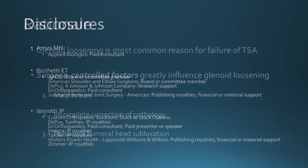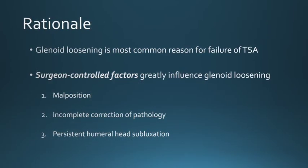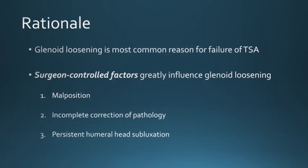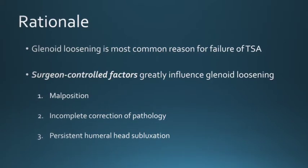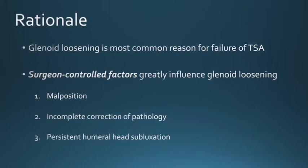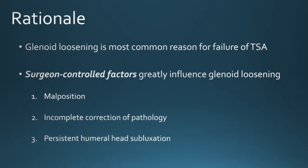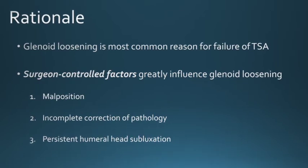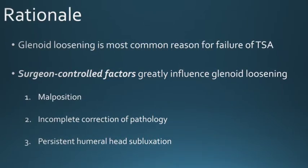Glenoid loosening is the most common reason for failure of total shoulder arthroplasty, and surgeon-controlled factors greatly influence glenoid loosening. These include malposition, incomplete correction of pathology, and persistent humeral head subluxation.